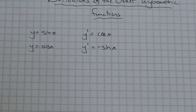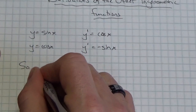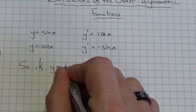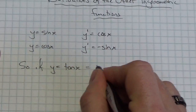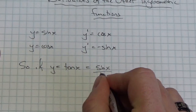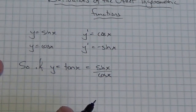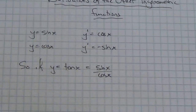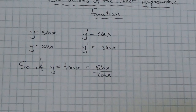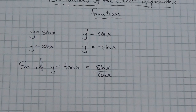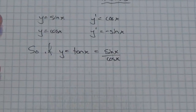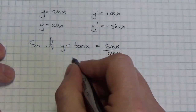What we're going to do here is show you how you determine the derivative of, let's say, tangent. So if y is equal to the tangent of x, which we know is equal to the sine of x divided by the cosine of x, then what's the derivative of the tangent of x? Once we go through this process, you'll have an idea of how we find the derivative of cotangent, cosecant, and secant — all the rest of that is going to be built the same way. So let's just dive right in.